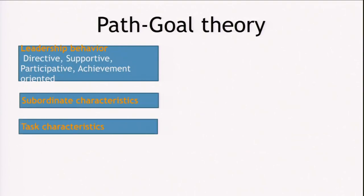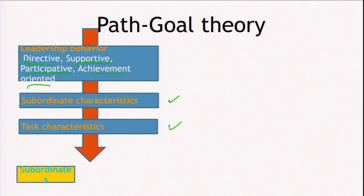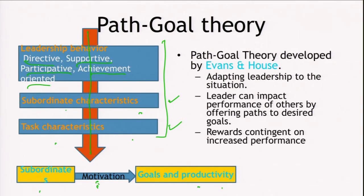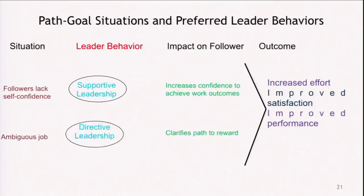Looking at the diagrammatic representation of path goal theory: leadership behavior may be directive, supportive, participative, or achievement oriented. Subordinate characteristics and task characteristics together influence subordinate motivation. When followers are sufficiently motivated, goals are reached and productivity increases. In summary, path goal theory developed by Evans and House talks about adapting leadership to the situation, where the leader impacts others' performance by offering paths to desired goals and rewards contingent on increased performance.